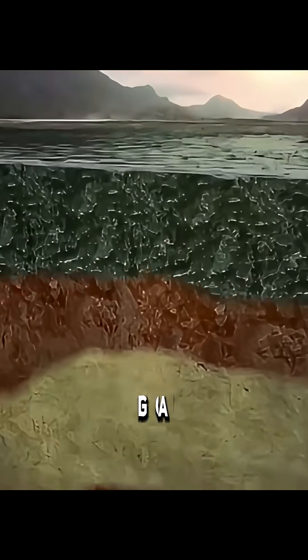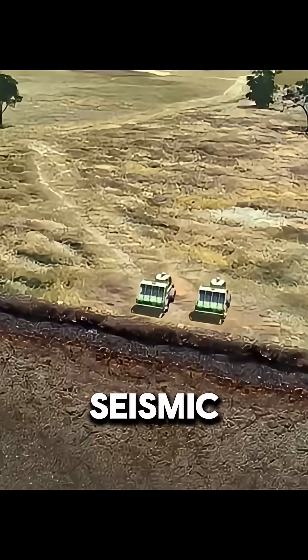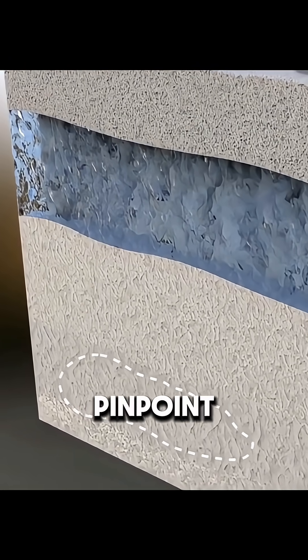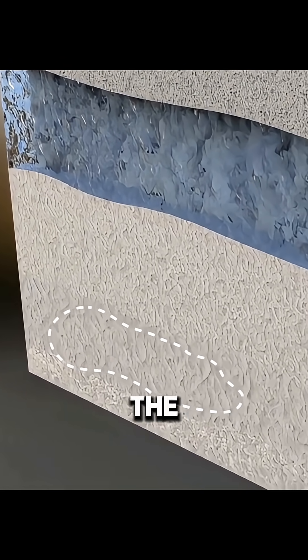First, workers have to find where the gas is located. They use special seismic trucks to send sound waves into the ground. These waves bounce back when they hit different rock layers, and by analyzing the reflections, experts can map out the underground structure and pinpoint the coal seam that contains the gas.